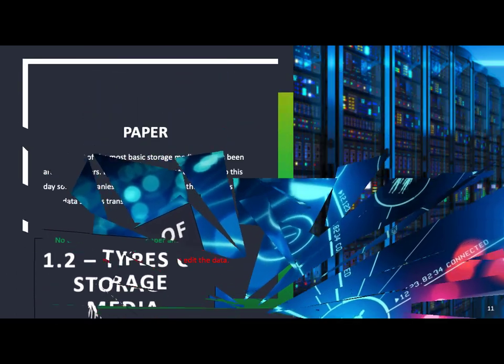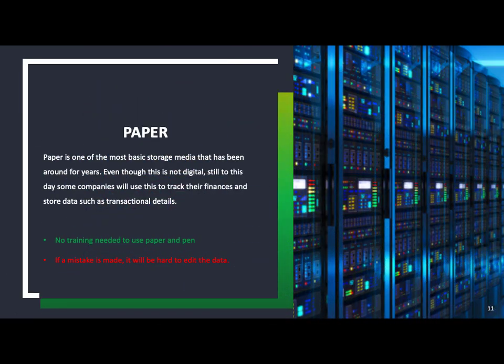Next we look at types of storage. The most basic is paper. Most people know how to write on paper and we can store a lot of information, file it away, and leave it there. There's no need for training — anyone who can write can use pen and paper to store data. A negative is that if a mistake is made, you might have to cross it out or redo it, making it very hard to edit.